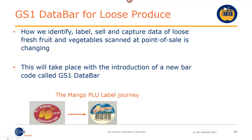We then moved to an EAN13 barcode like all other products around the world — baked beans, tissues, shampoo — everything within a supermarket carries a GS1 barcode. Over 5 billion GS1 barcodes are scanned daily around the world, making it really the only standard for data capture at point of sale. Now we're looking at a new type of barcode for the PLU label. The reason we're moving away from the EAN13 to data bar is purely size.